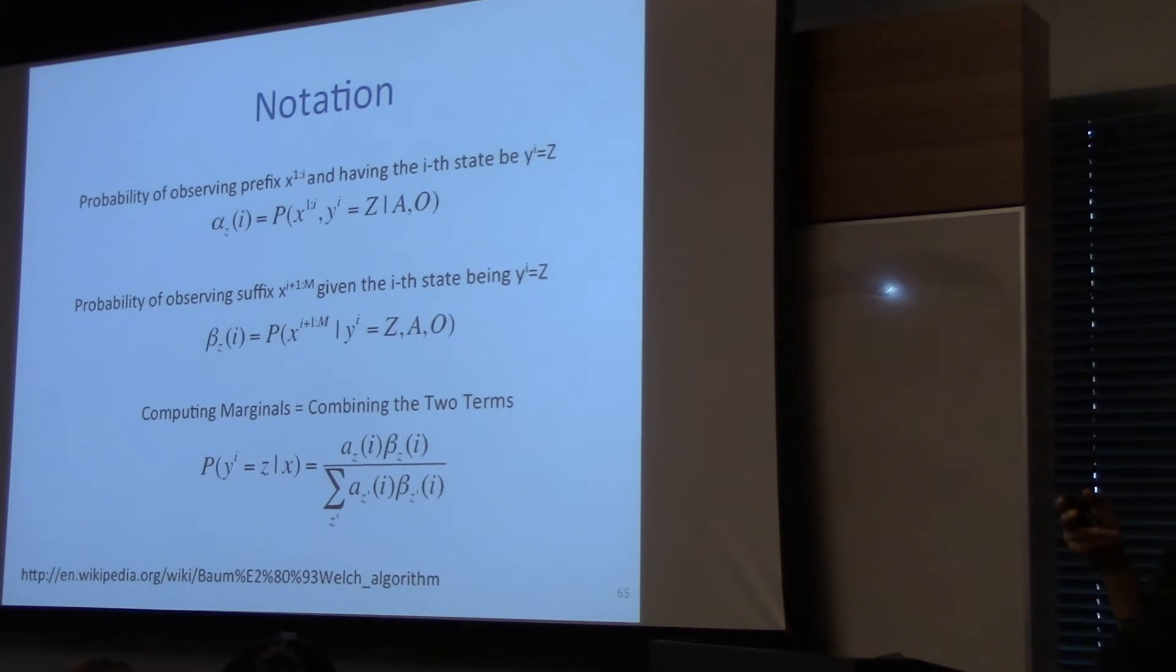The alphas and betas for every length i, for every z, without having to do exhaustive enumeration. You do this using a dynamic program.